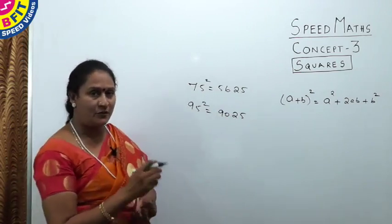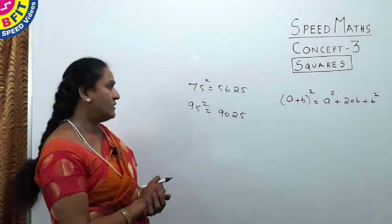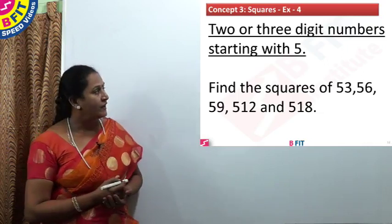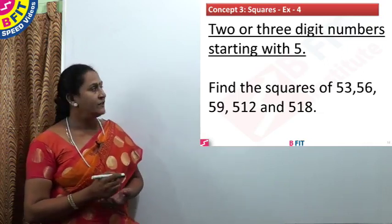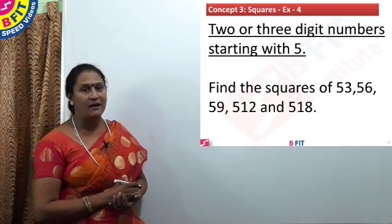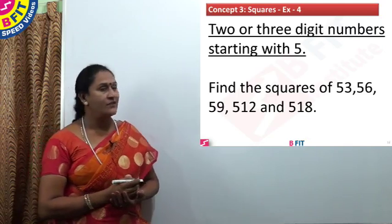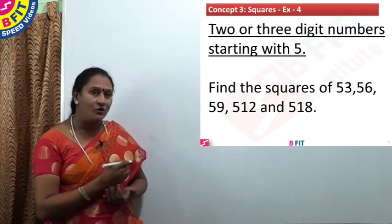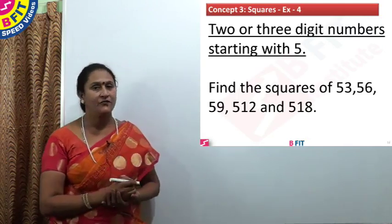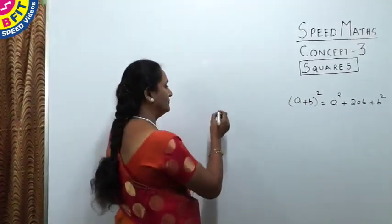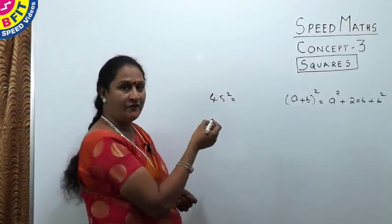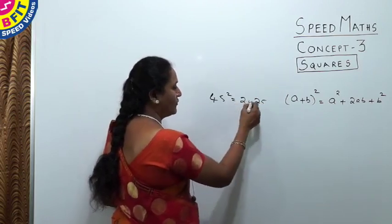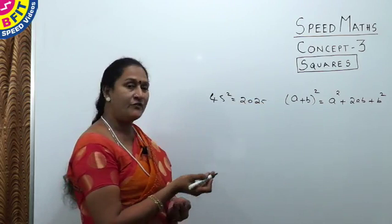We have easily found squares of two-digit numbers ending with 5. Now we will see how to find squares of numbers starting with 5. The question is: find the squares of 53, 56, 59, 512, and 518. For comparison, 45 ends with 5, so we write 25 and multiply 4 by its following number to get 2025.